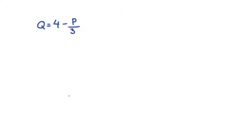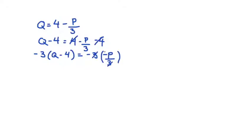So first to do this, I'm just going to do some algebraic manipulation. I'll take away 4 from each side. The 4s cancel there. Then I multiply both sides by negative 3. That's good. The negatives cancel and 3 over 3 is equal to 1, so we get negative 3Q plus 12 is equal to P.